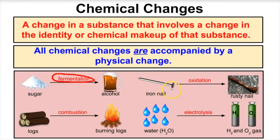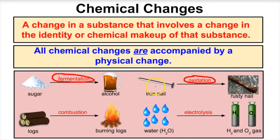Another example: if we have an iron nail and leave it out overnight, it might turn into a rusty nail over time. That process is called oxidation — the iron is combining with oxygen to produce iron oxide, or rust. That is a chemical change because the chemical composition of the nail is now different from what we started with.